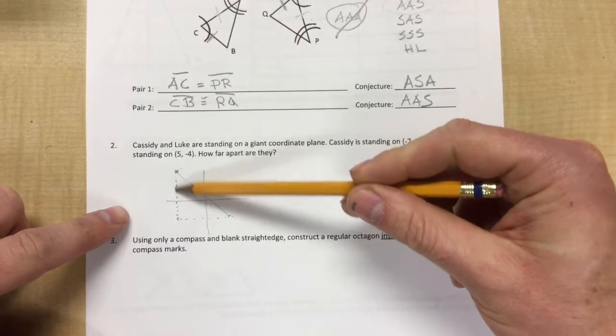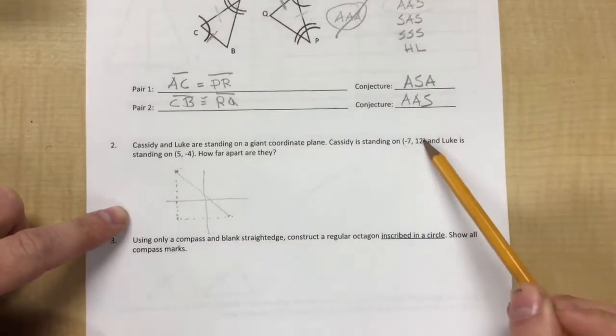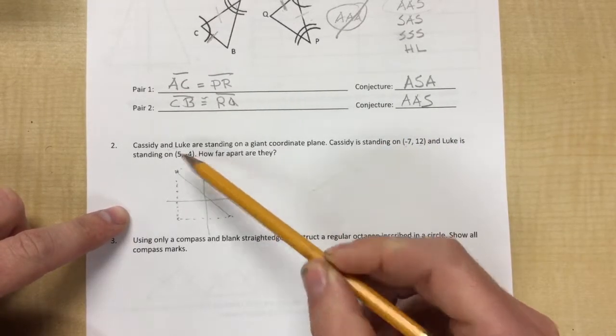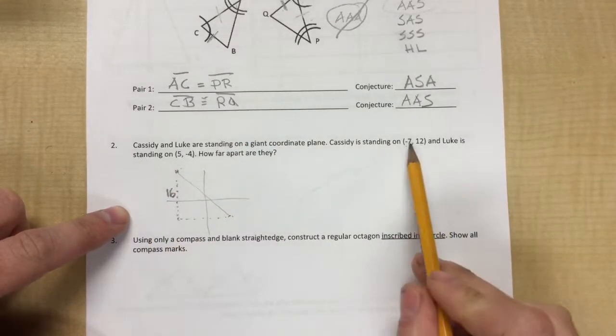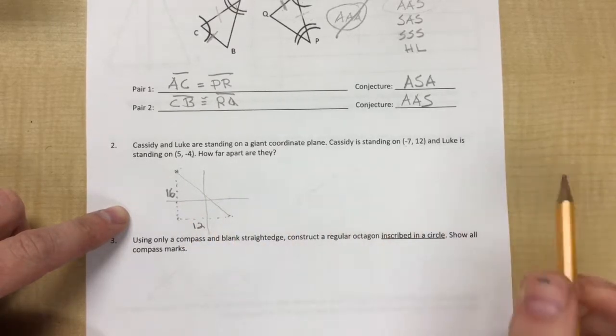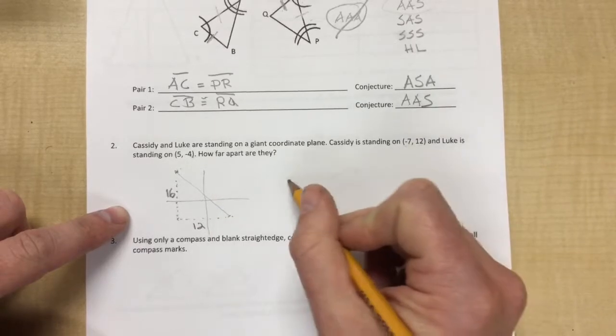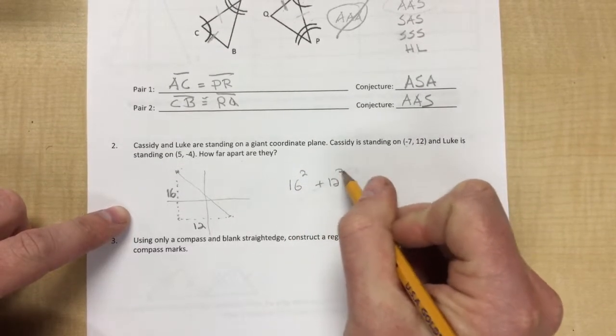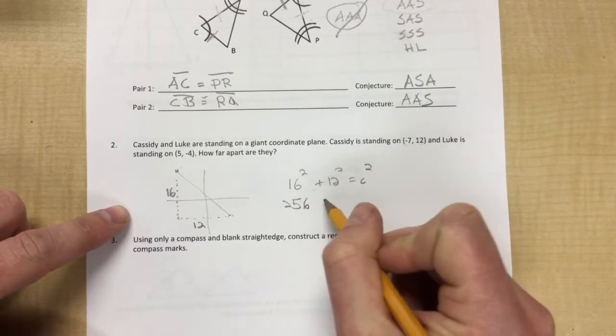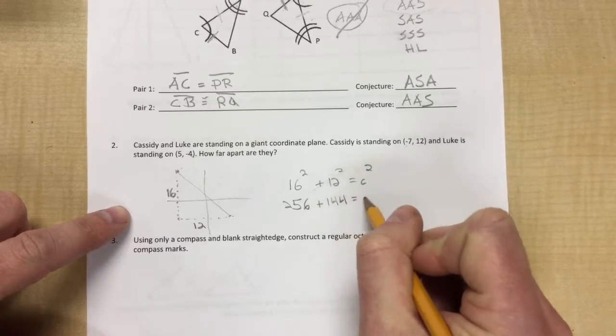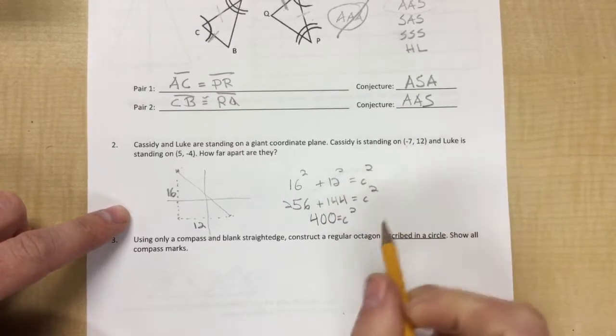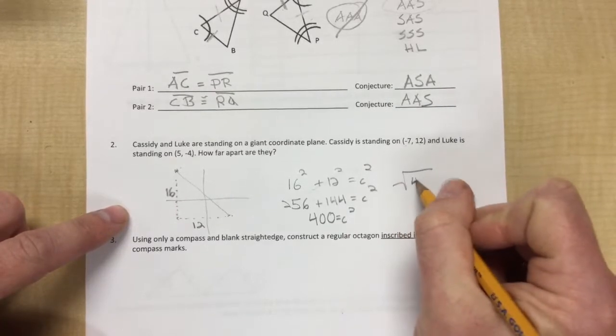And we need to figure out how much this changed. So up and down is our y value, so if we change from 12 down to negative four, that's down 16. And if we go from negative seven to positive five, that's over 12. So we now put it in the Pythagorean theorem: 16 squared plus 12 squared is c squared, and I think this is, I hope it is, 256 plus 144 is c squared. And then when you add those two together we get 400 is c squared, and we take the square root of both sides. The answer is the square root of 400.